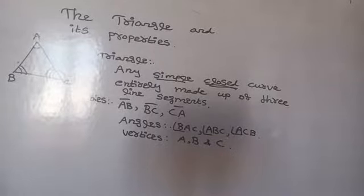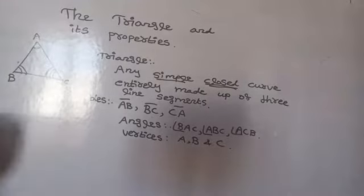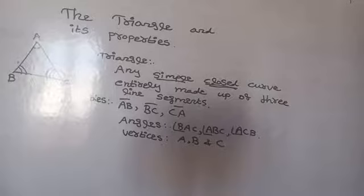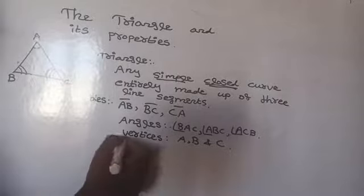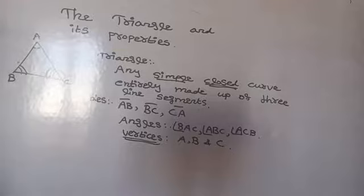What is the side opposite to vertex A? It is BC. Note: 'vertices' is plural and 'vertex' is singular.